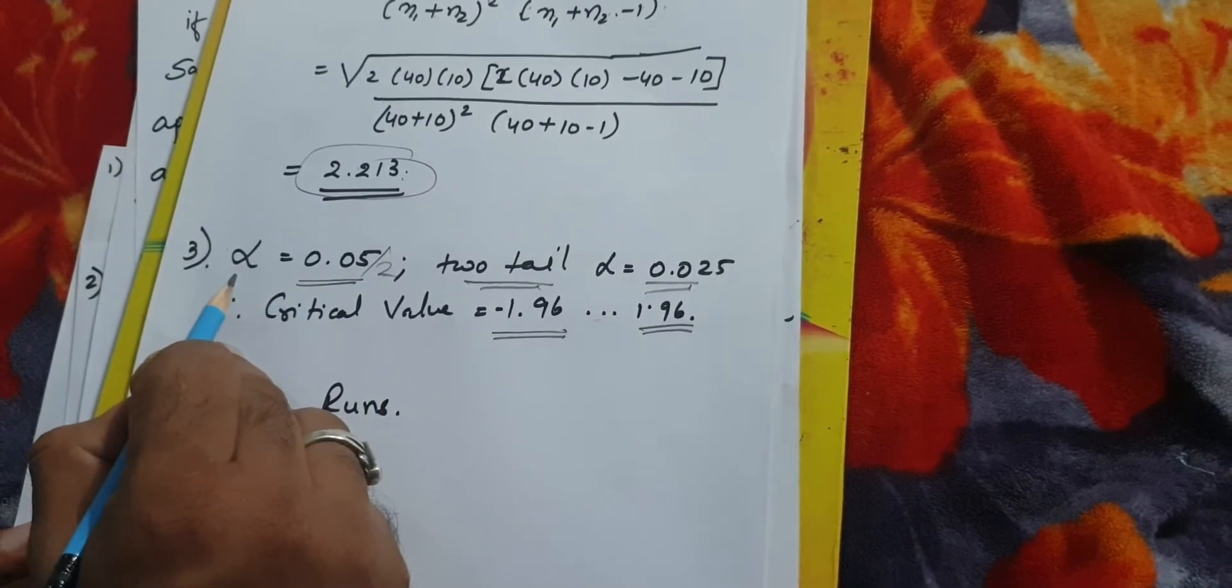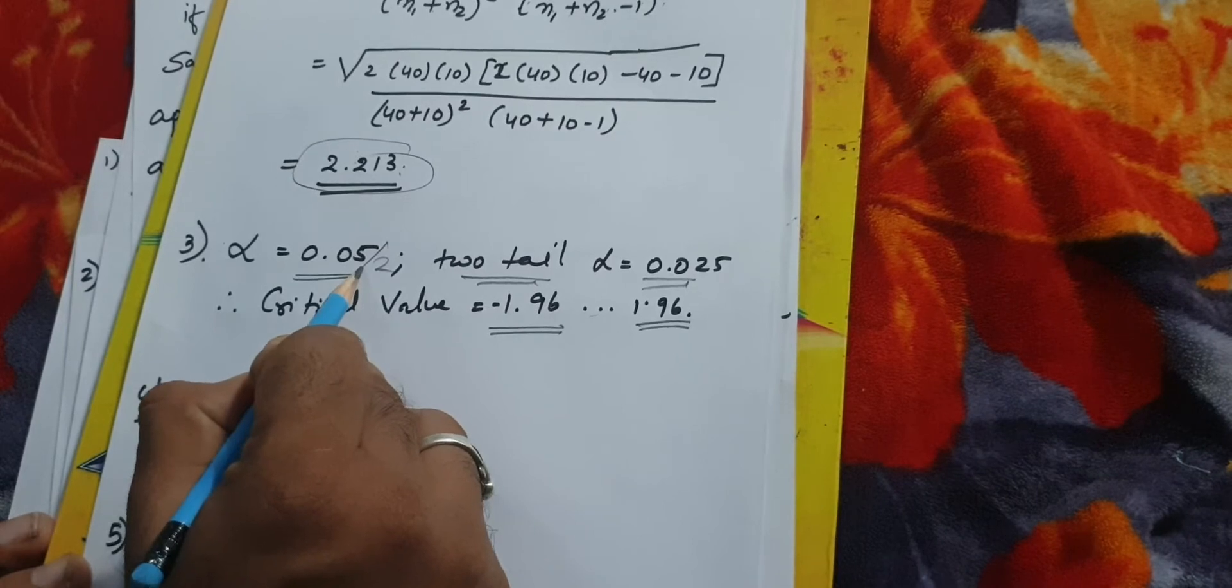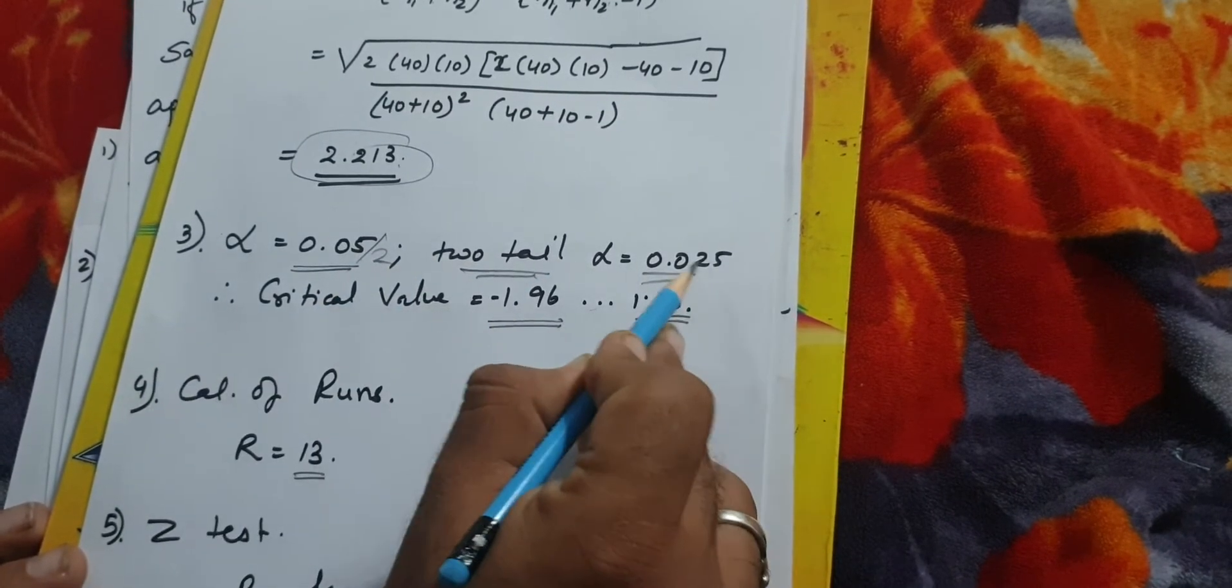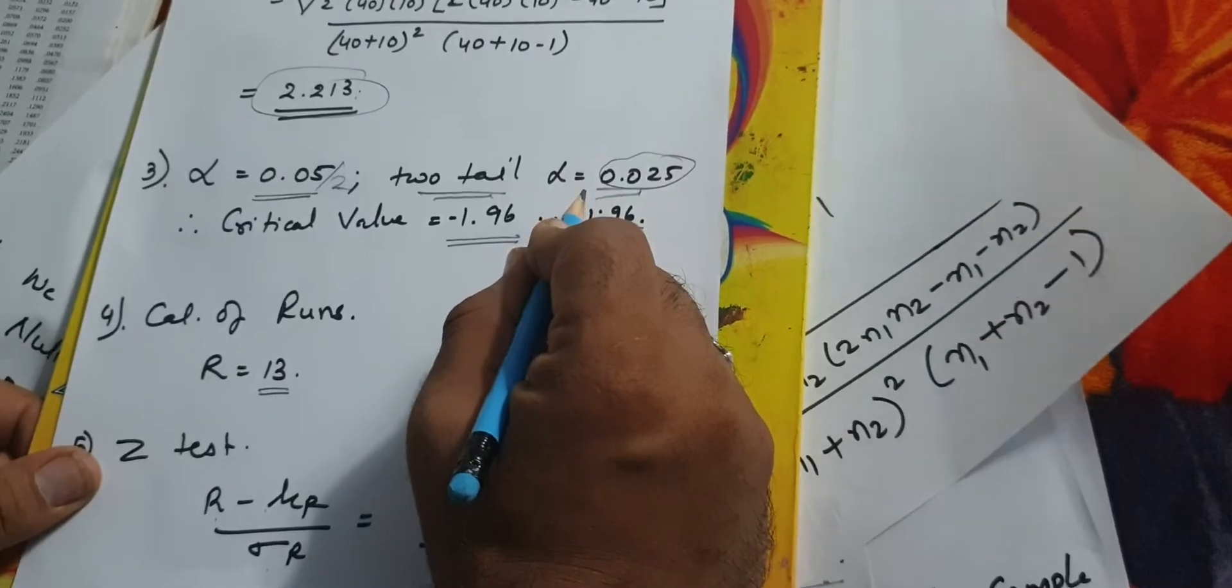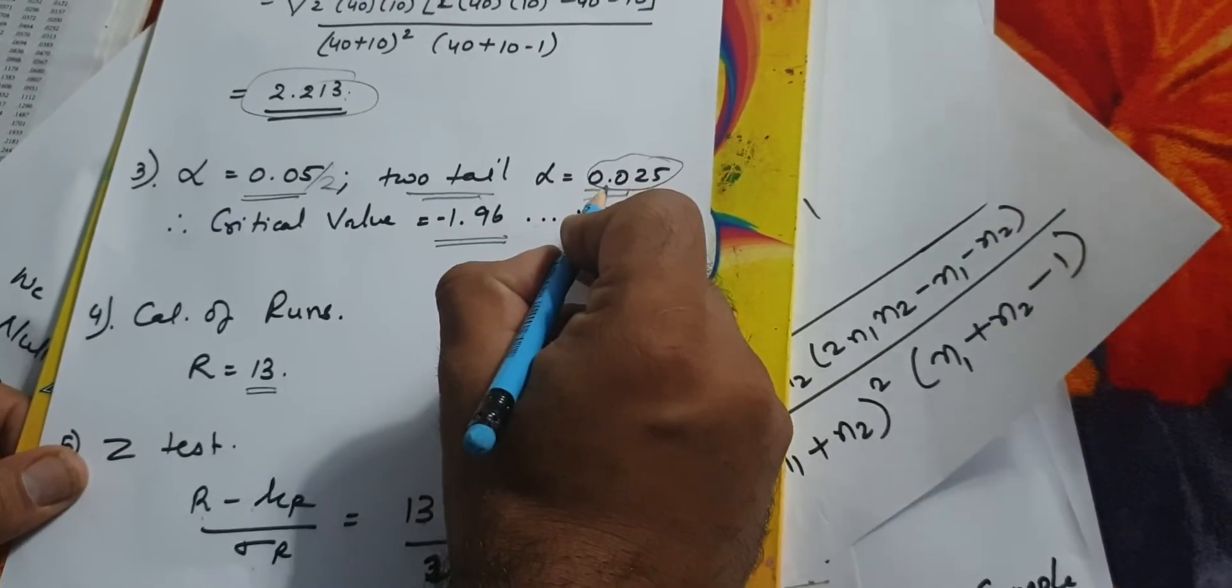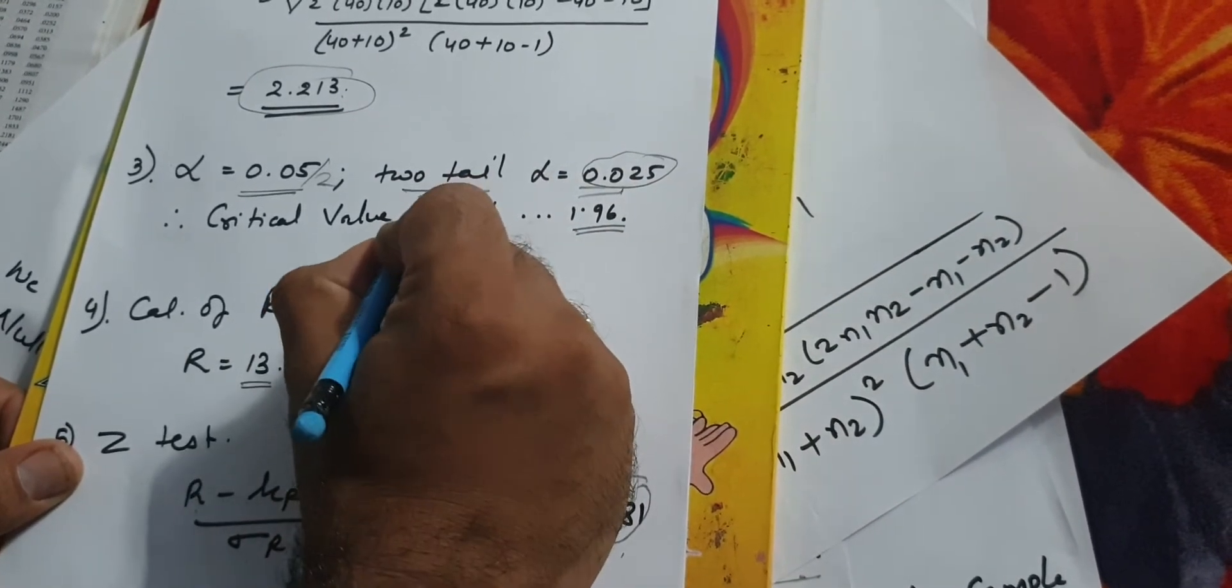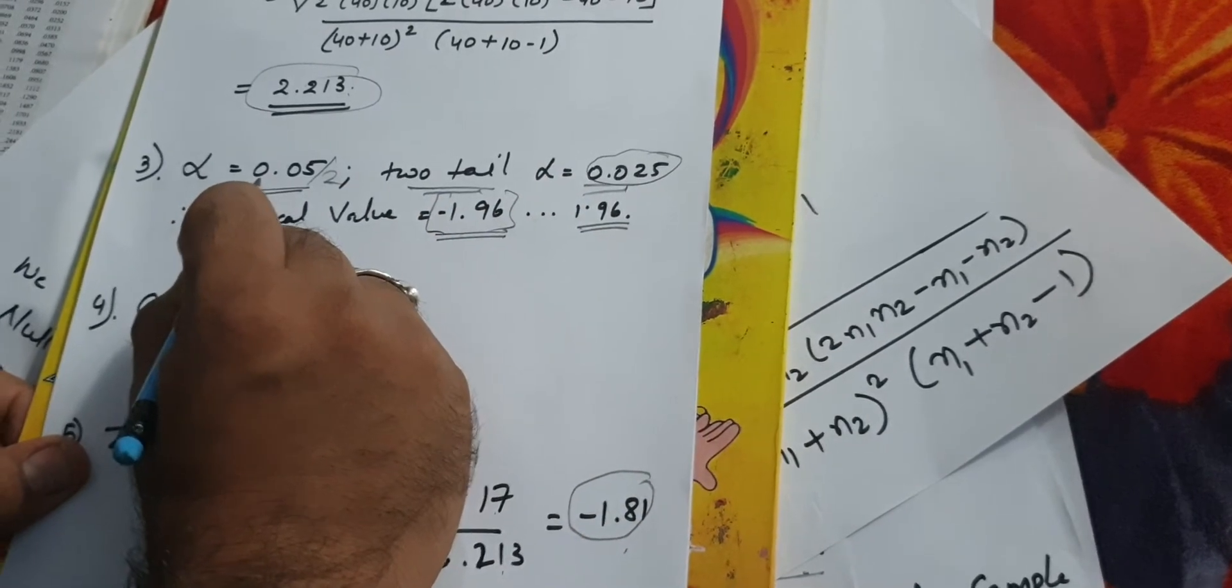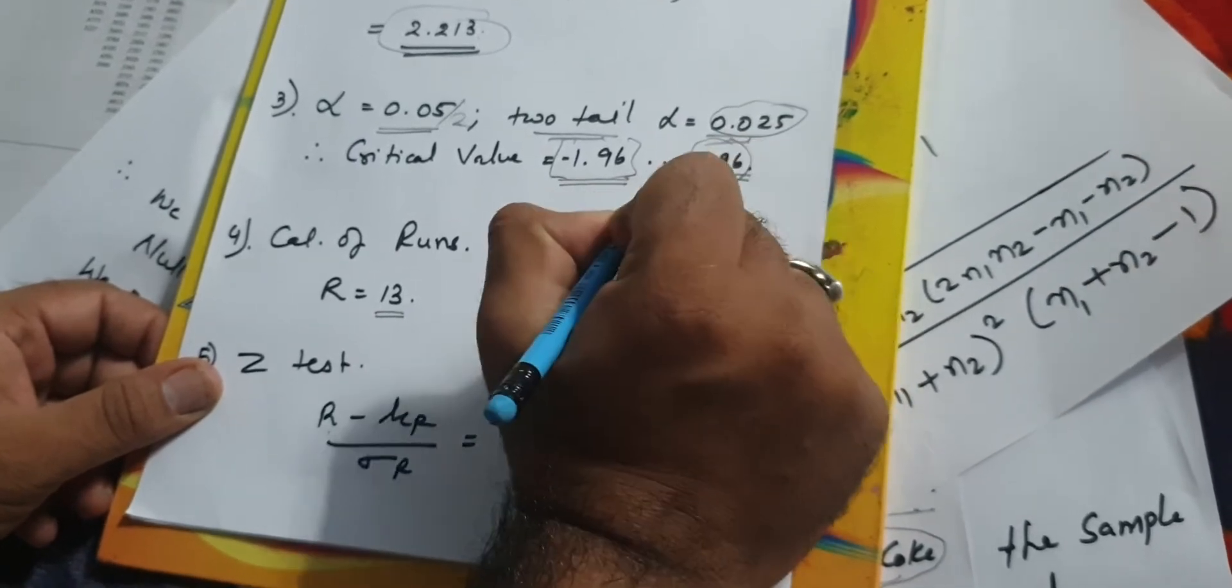Step 3: our alpha value was 0.05, so 5 percent. Divide it by 2, it's 0.025. When you see the critical values, for 5 percent alpha for two-tail, the value would be 1.96.